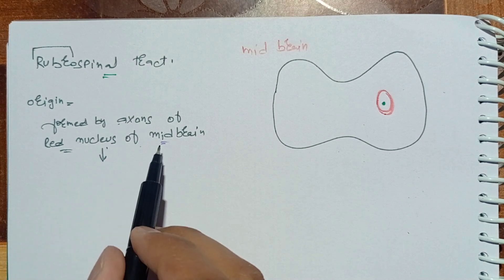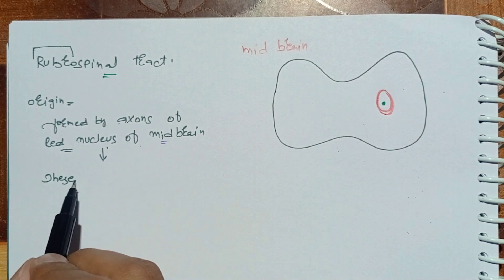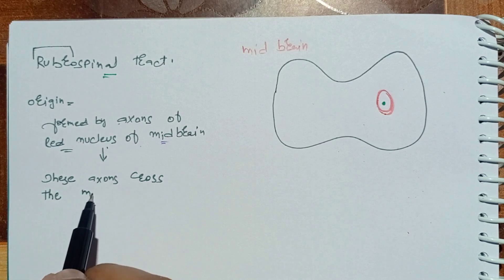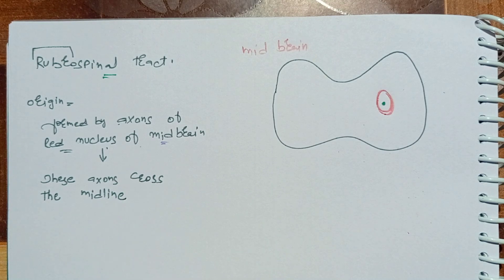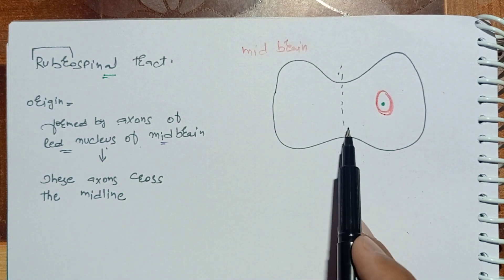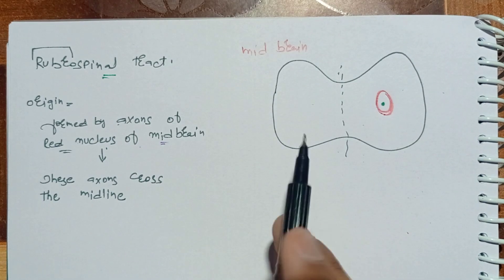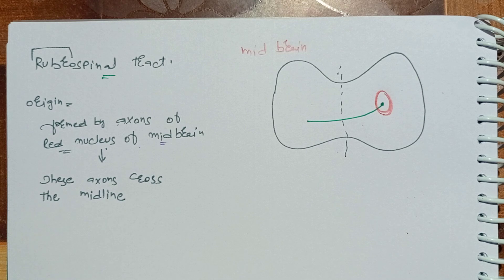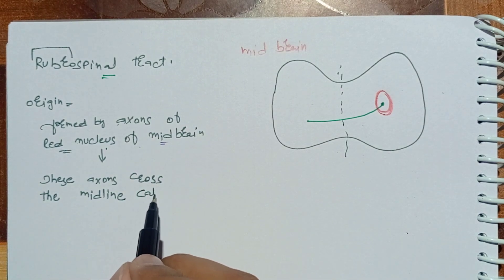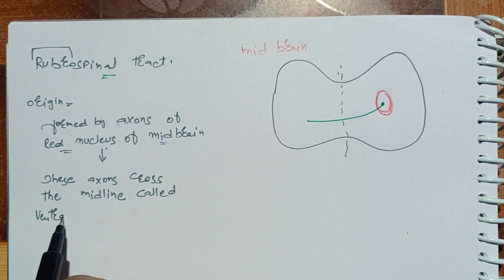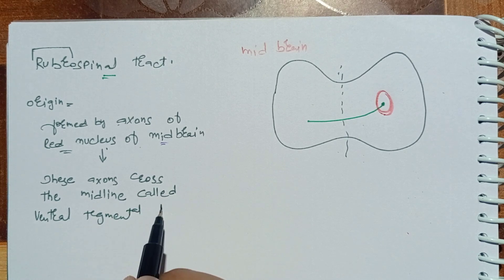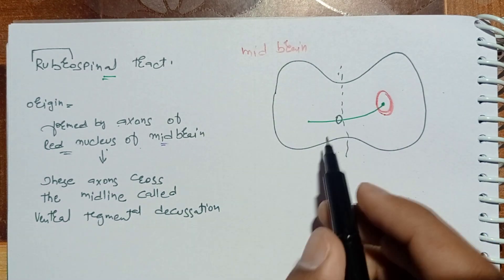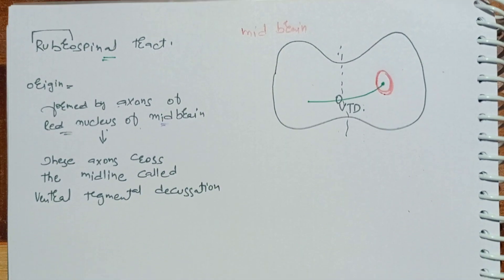After its origin, these axons cross the midline — this is the midline of the midbrain. This crossing is called ventral tegmental decussation.